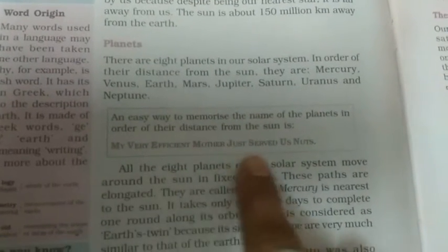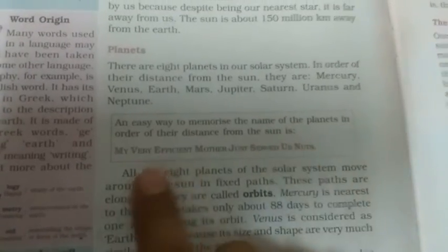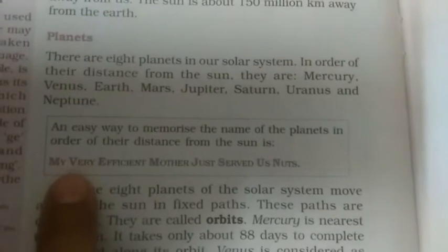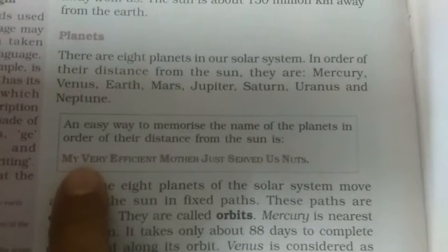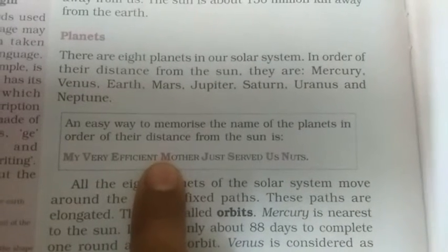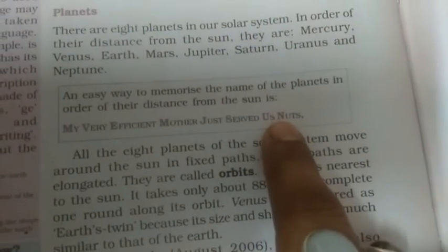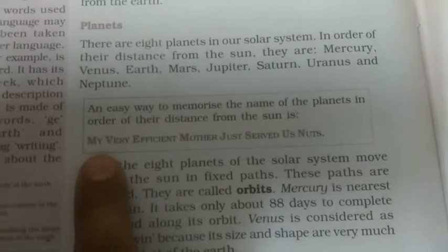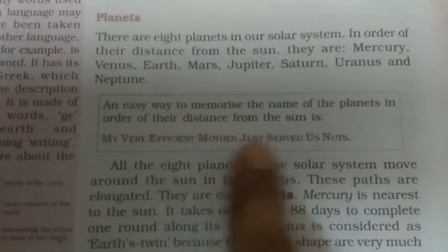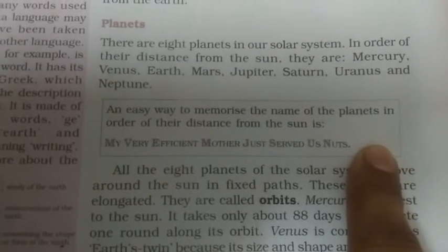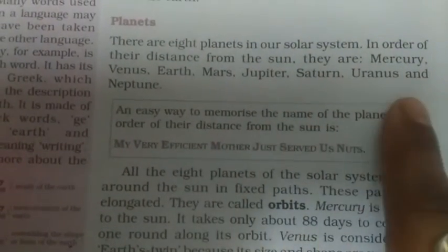To learn the order of the planets, there is a simple sentence: 'My Very Efficient Mother Just Served Us Nuts.' The first letter of each word gives the name of the planet: M for Mercury, V for Venus, E for Earth, M for Mars, J for Jupiter, S for Saturn, U for Uranus, and N for Neptune. With the help of this sentence, you can easily learn the names of the planets in their order in the solar system.